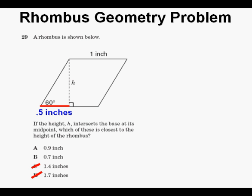Let's go to the calculation. If the height intersects the base at the midpoint, this section here in the red is one half, or .5 inches.